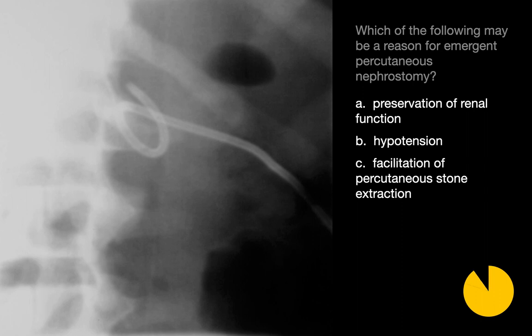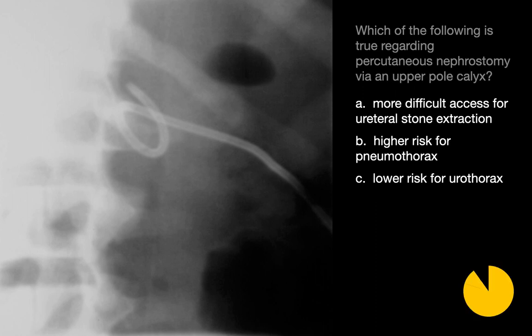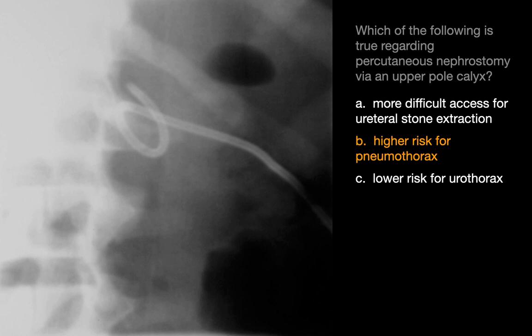The emergent indication for percutaneous nephrostomy amongst these choices is hypotension, which would be suspicious for urosepsis in this patient with a UPJ obstruction. Regarding percutaneous nephrostomy via an upper pole calyx, the answer is B: higher risk for pneumothorax. Ureteral stone extraction is easier with an upper pole approach since the approach to the ureter is more in-line and direct, but the risk of traversing the pleural space means higher risk for both pneumothorax and urothorax.